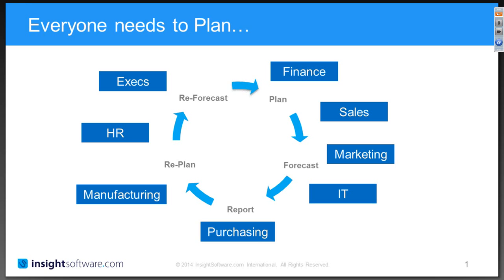You'll then have to report on that — the reporting is fundamental. There's no point having a decent plan if you can't report on actuals versus the plan later on throughout the year. You'll look at those reports, there'll be an element of replanning, then later on there'll be re-forecasting, and then the cycle will start all over again. So everyone needs to plan, and this is what we want to talk about: how to get all of that data integrated in JD Edwards.